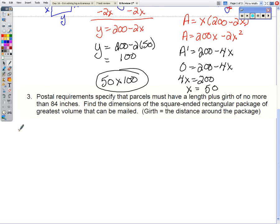If we're going to draw a picture for this package, I'm going to draw a long rectangular box with a square face. So these have a dimension of x and a length of y. Girth is the perimeter, the distance around.